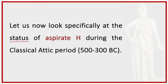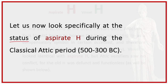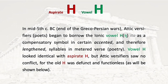Let's now look specifically at the status of the aspirate during the classical Attic period. In mid-5th century BC, at the end of the Greco-Persian Wars, Attic versifiers began to borrow the Ionic vowel eta as a compensatory symbol in certain accented and therefore lengthened syllables in metered verse. The vowel eta looked identical with the aspirate symbol, but Attic versifiers saw no conflict, for the old aspirate was defunct and functionless.